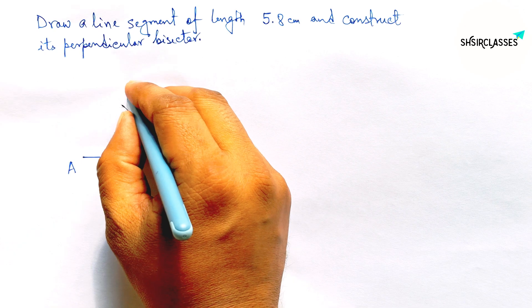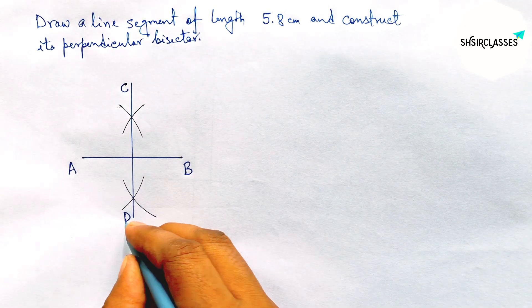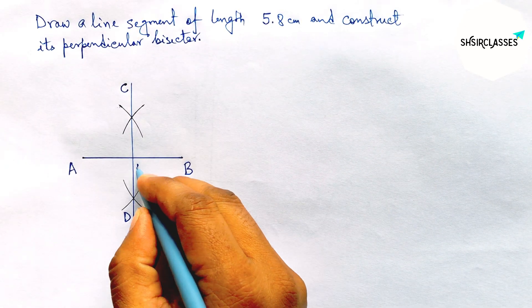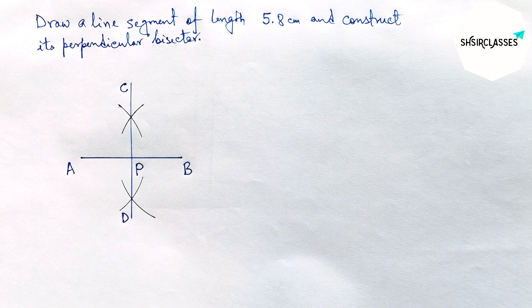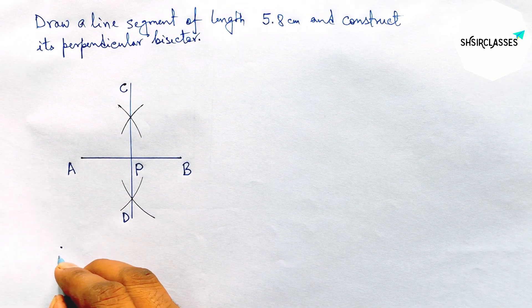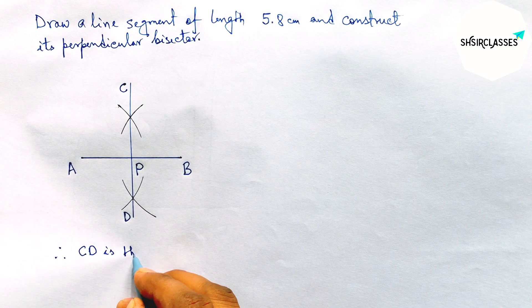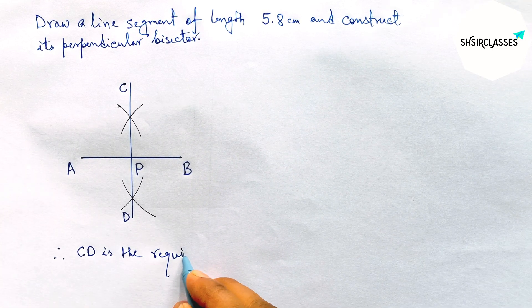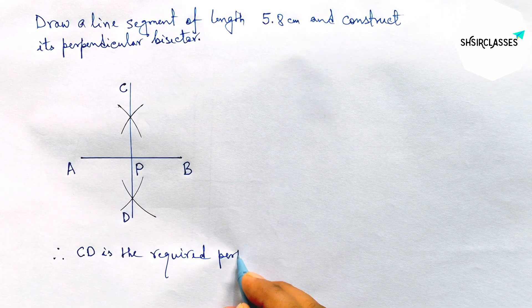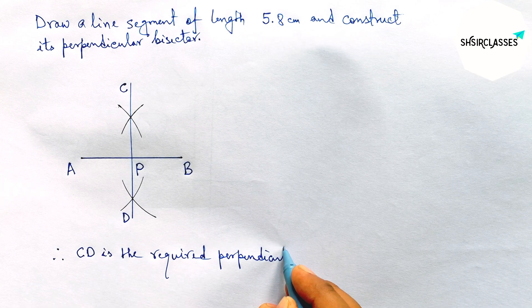So labeling here C and here D. Now AB and CD meet at a point. So therefore CD is the required perpendicular bisector to the given line.